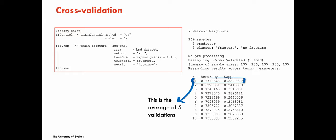The maximum accuracy is obtained with seven neighbors. It's very similar to k equals 3, k equals 9, and k equals 10. If you use a different criterion such as kappa, the best choice would be k equals 3. So the statistic you choose to evaluate the model might not give exactly the same selection, especially when performance is very similar across different values of the tuning parameter — in this case, the number of neighbors.